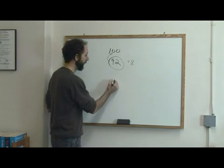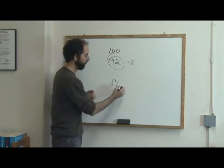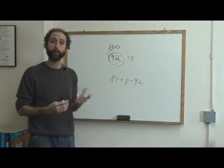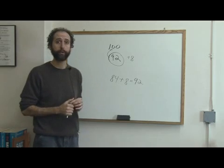Somebody else maybe who had gotten an 84 with the curve now has a 92. So an 84 curved on this grading curve would be a 92.